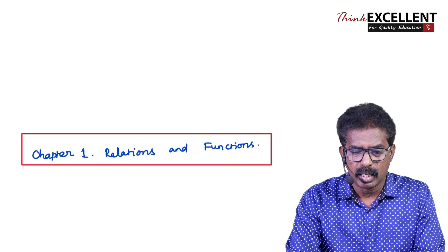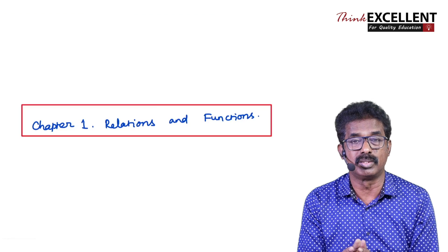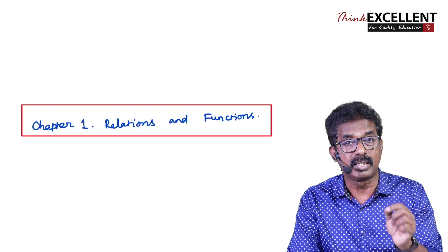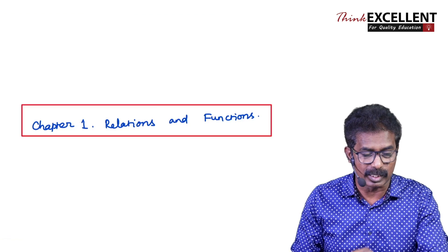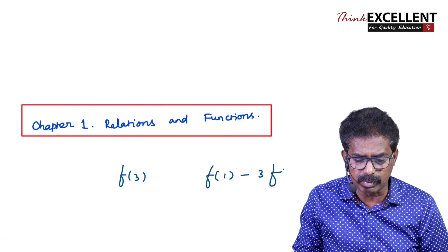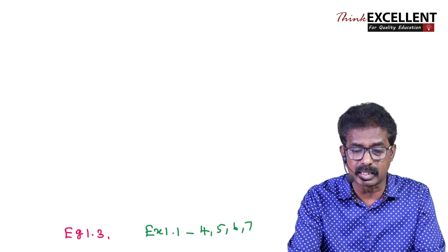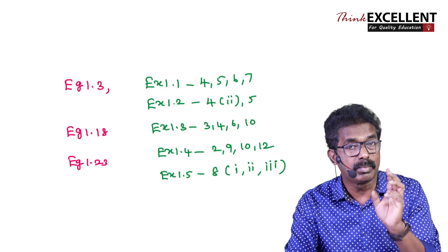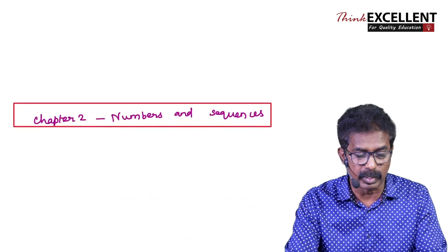Now let us see some important areas for 5-mark questions. You have to concentrate on 5 marks — that is 50 marks total. For Chapter 1 — Sets, Relations and Functions — concentrate on Cartesian product and verification-based questions. Then the representation of functions in 4 ways: arrow diagram, set of ordered pairs, graph, and tabular form. Also, composition of functions — you can expect questions like finding f(3), f(1), or expressions like −3 × f(4) / f(−3). These are the four common question types. Example and exercise sums are shown on screen — go through them.